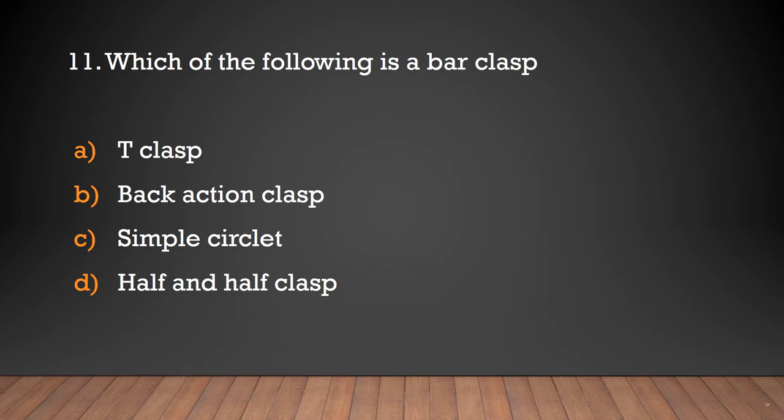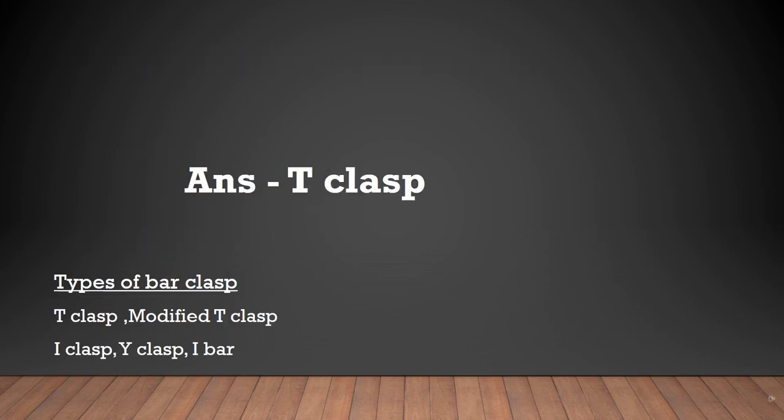Which of the following is a bar clasp? T clasp, back action clasp, simple circlet, or half and half clasp? The answer is T clasp. Different types of bar clasp are: T clasp, modified T clasp, I clasp, Y clasp, and I-bar clasp.